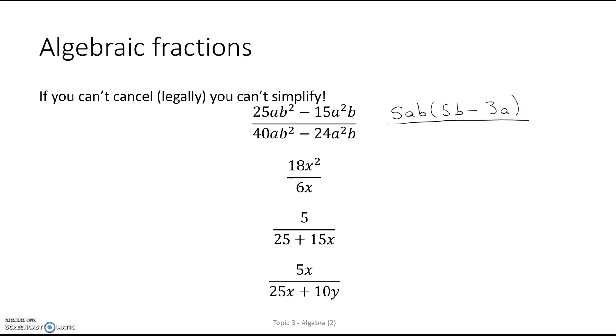And on the bottom line, the biggest number, common factor, is 8. The biggest number of A's is A. The biggest number of B's is B. Then we've got 8 times 5, B. And then 8 times 3 gives us 24. And we need another A. So now, because this is multiplication, then we can cancel.